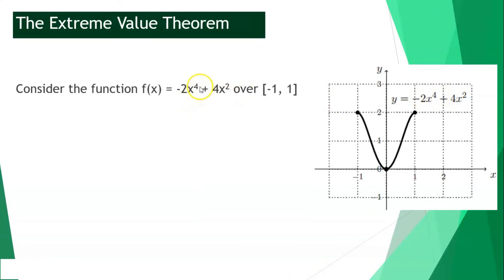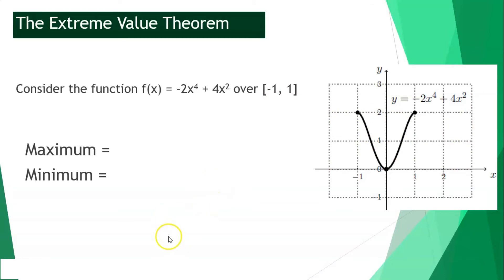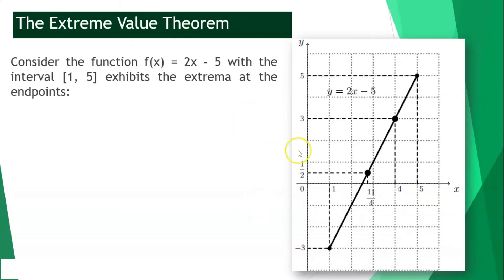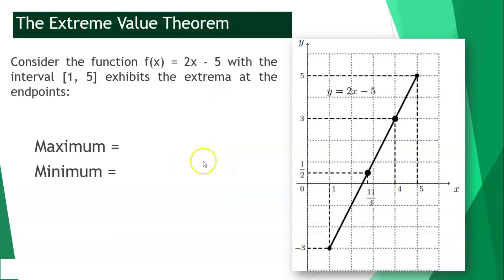This is a graph of negative 2x⁴ plus 4x squared over the closed interval from negative 1 until 1. Given a graph, it's easier to identify the extreme points. Our highest points are located at negative 1, positive 2 and positive 1, positive 2. The lowest point, or the minimum, is located at 0, 0. For the graph of 2x minus 5 from the interval 1 until 5, our maximum point is located at 5, 5, while the minimum point is located at 1, negative 3.